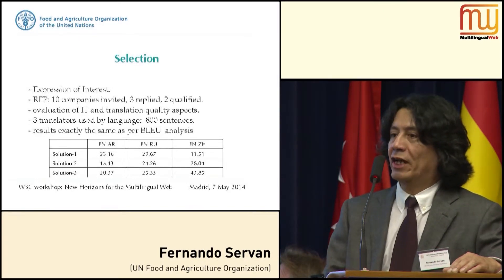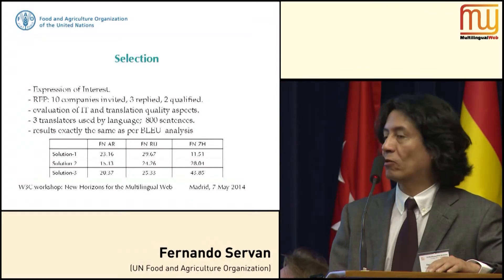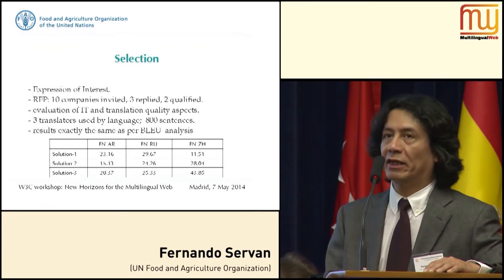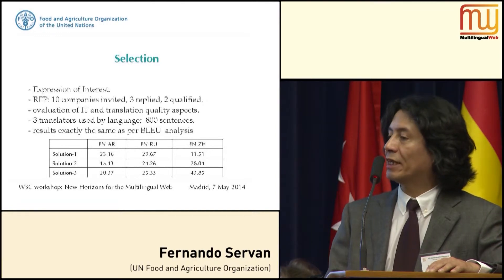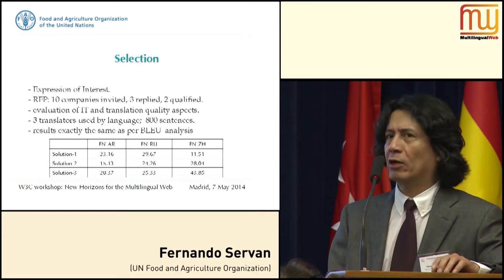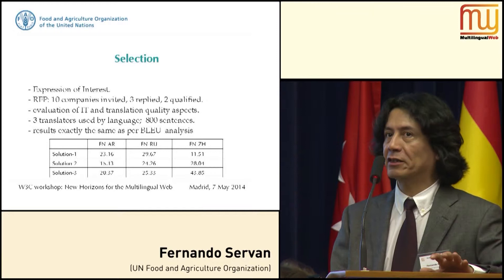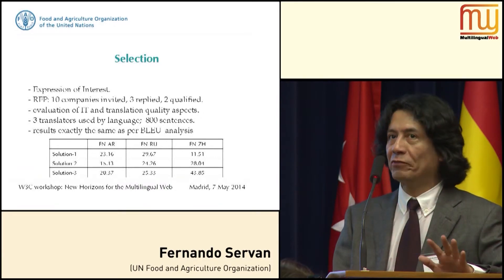We went through a traditional tender process — traditional in the UN system — which involved releasing an expression of interest, getting companies willing to present offers, eventually making a request for proposals, and getting companies to submit offers. An interesting issue for us was that the companies able to offer services in all three language pairs — English to Arabic, English to Chinese, and English to Russian — were very few. We received offers from companies covering one or two, but replies covering all three were limited.